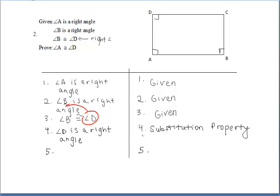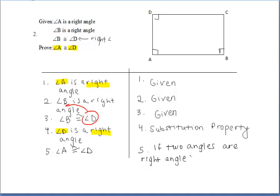Since we wanted to prove that angle A is congruent to angle D, I think we have enough information. In our statements, we listed that angle A is a right angle, and we also mentioned in our proof that angle D is a right angle. So we mentioned that they're both right angles — that's enough to say that they're congruent. So angle A is congruent to angle D. Why? Because if two angles are right angles, then they are congruent.